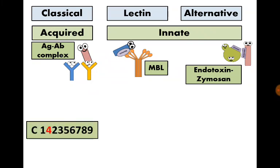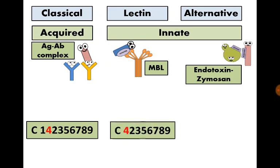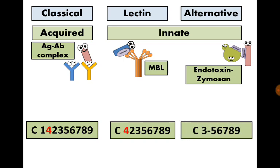The sequence of activation in the classical pathway is C1, then C4 and C2, then C3, then C5, C6, C7, C8, C9. In the lectin pathway, there is no C1, so the sequence is C4 and C2, then C3, then C5, C6, C7, C8, and C9. In the alternative pathway, there is no need for C1, C2, or C4, so the sequence is C3, C5, C6, C7, C8, and C9. The alternative pathway additionally needs Factor B, Factor D, and properdin.